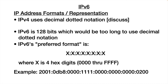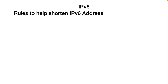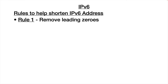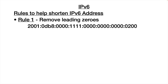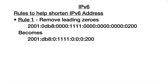They've come up with a couple of rules to shorten IP version 6 addresses. The first rule is to get rid of all the leading zeros. So if we remove all the leading zeros from our starting value, we get a shorter result — but we still have those 8 values separated by colons.